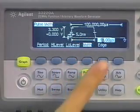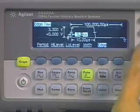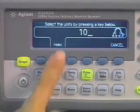Let's look at our pulse in graph mode. We can adjust the transition time from low to high. Let's select 10 nanoseconds.